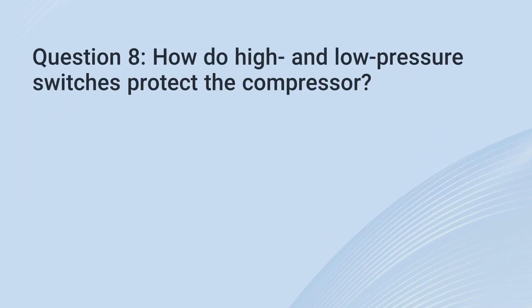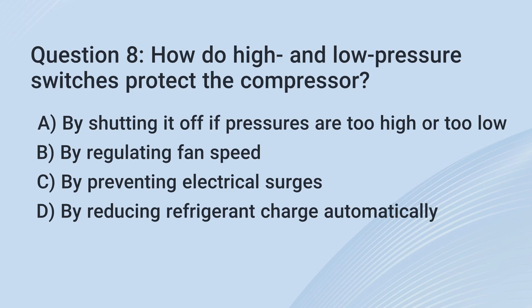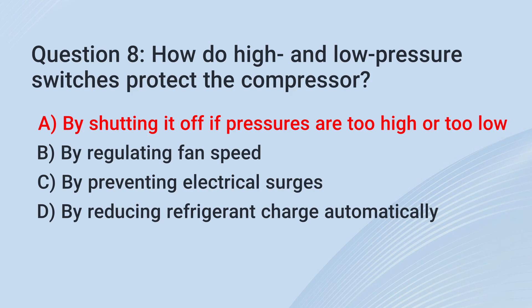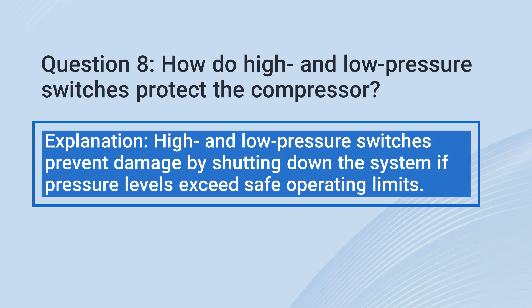Question 8: How do high and low pressure switches protect the compressor? a. By shutting it off if pressures are too high or too low. b. By regulating fan speed. c. By preventing electrical surges. d. By reducing refrigerant charge automatically. The correct answer is a: By shutting it off if pressures are too high or too low. High and low pressure switches prevent damage by shutting down the system if pressure levels exceed safe operating limits.